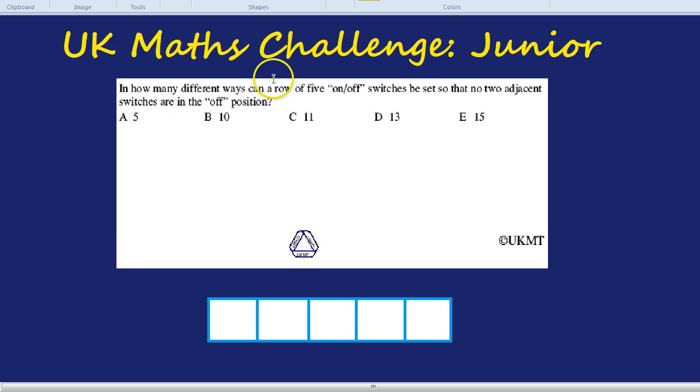Welcome to another UK Maths Challenge Junior Challenge. In this question, which you might want to pause the video and have a go at first before I go through it, we have an interesting combinations type of question. In how many different ways can a row of five on-off switches be set so that no two adjacent switches are in the off position? Adjacent is quite a useful word to know. It just means next to each other, side by side, not opposite, but side by side, adjacent.